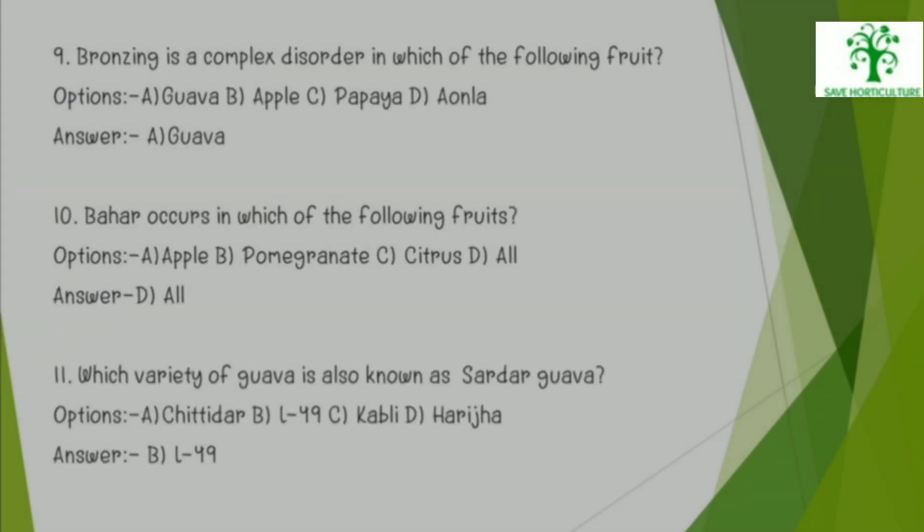9. Bronzing is a complex disorder in which of the following fruits? Options: Guava, Apple, Papaya, or Amla. The right answer is Guava. 10. Bahar or flowering occurs in which of the following fruits? Options: Apple, Pomegranate, Citrus, or All of these. The answer is All of these.